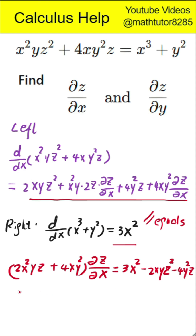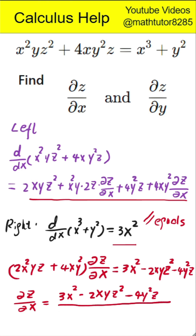Now, solve for the partial derivative of z with respect to x. The partial derivative of z with respect to x equals the numerator, which is three times x squared minus two times x times y times z squared minus four times y squared times z, divided by the denominator, which is two times x squared times y times z plus four times x times y squared.